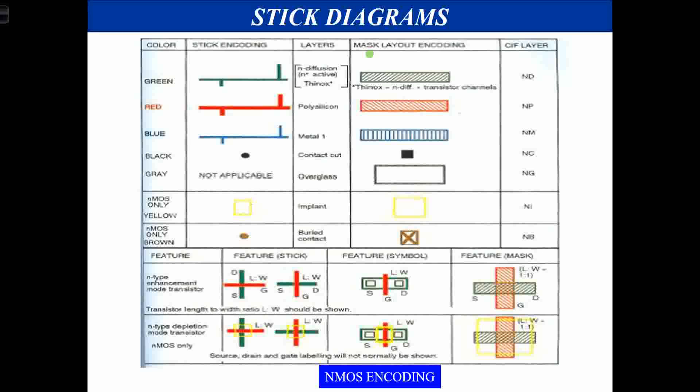For NMOS enhancement mode transistor, polysilicon crossing the N diffusion represents the transistor. For depletion mode, polysilicon crosses the diffusion with an implant over it. Either polysilicon crossing diffusion or diffusion crossing polysilicon both represent a transistor. For PMOS encoding, everything is the same except N diffusion is replaced by P diffusion, which is brown.